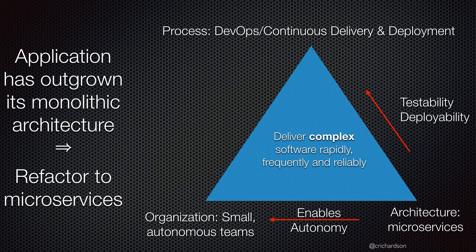On the one hand, if your application has actually outgrown its monolithic architecture and it is bloated and heavyweight, then refactoring to a microservice architecture makes a lot of sense. That's because microservices give you the testability and deployability that you need in order to do DevOps, which is a superset of continuous delivery and continuous deployment. It also enables you to restructure your engineering organization as a set of small autonomous, so-called two-pizza teams.